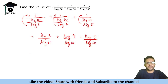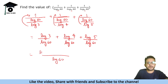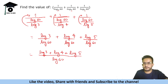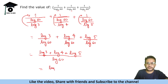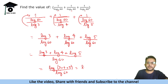Now we have the common denominator log 60. So the numerator becomes log 3 plus log 4 plus log 5. Whenever we add logarithms, we multiply those values: log 3 plus log 4 plus log 5 equals log(3×4×5) = log 60. So we get log 60 over log 60, which equals 1.